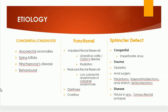There may also be organic sphincter defects — congenital, for example imperforate anus, or from trauma such as obstetric trauma, or anal surgery like fistulectomy, hemorrhoidectomy, anal stretch, and sphincterotomy. Diseases such as tumors of the rectum and anal canal and rectal prolapse also result in sphincter defects and fecal incontinence.